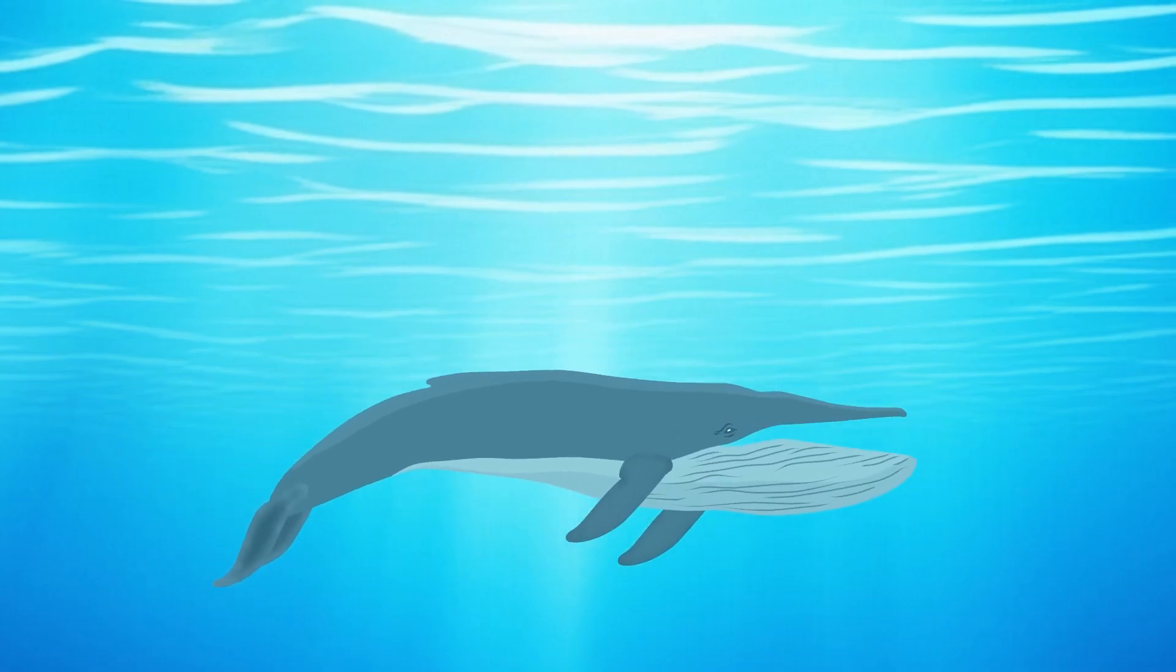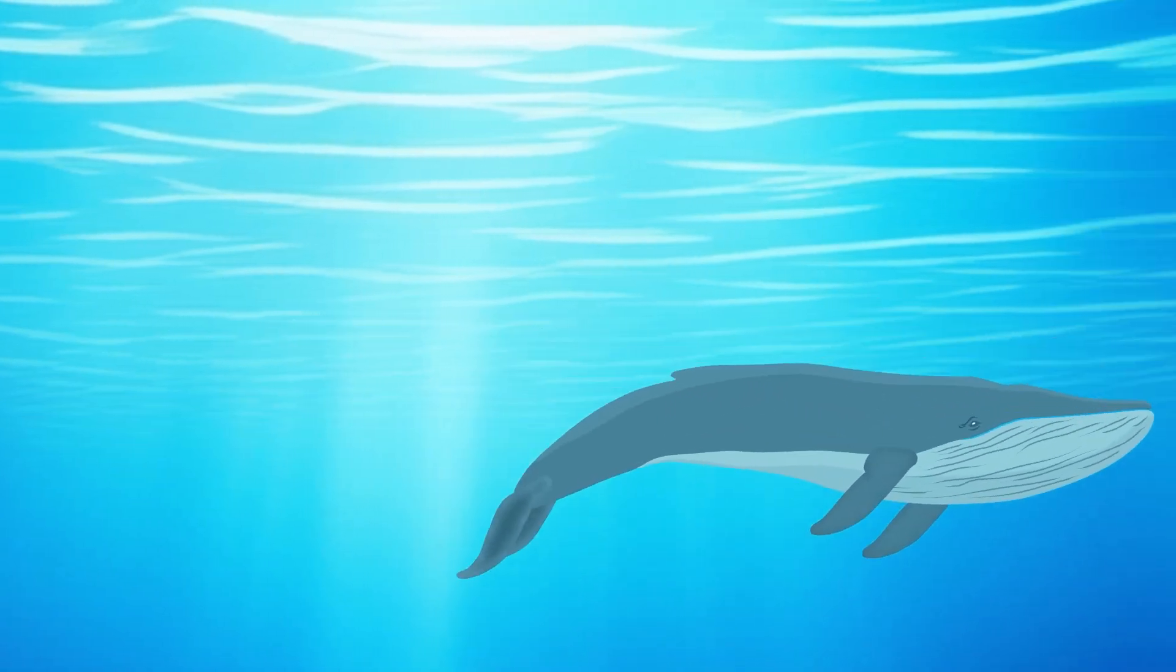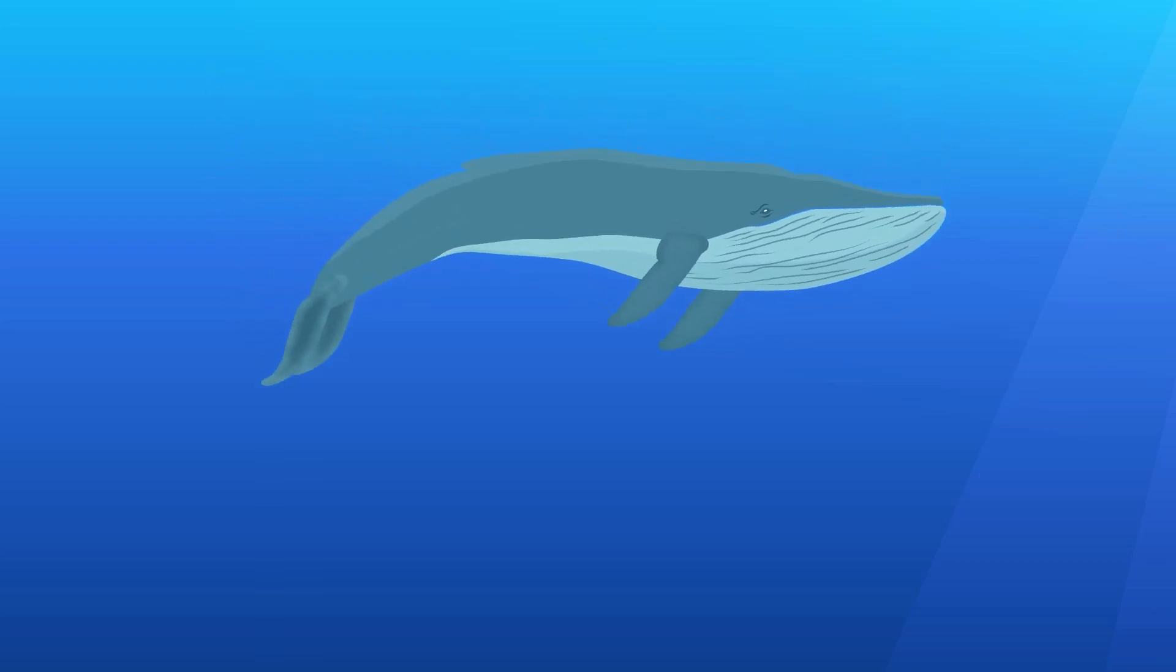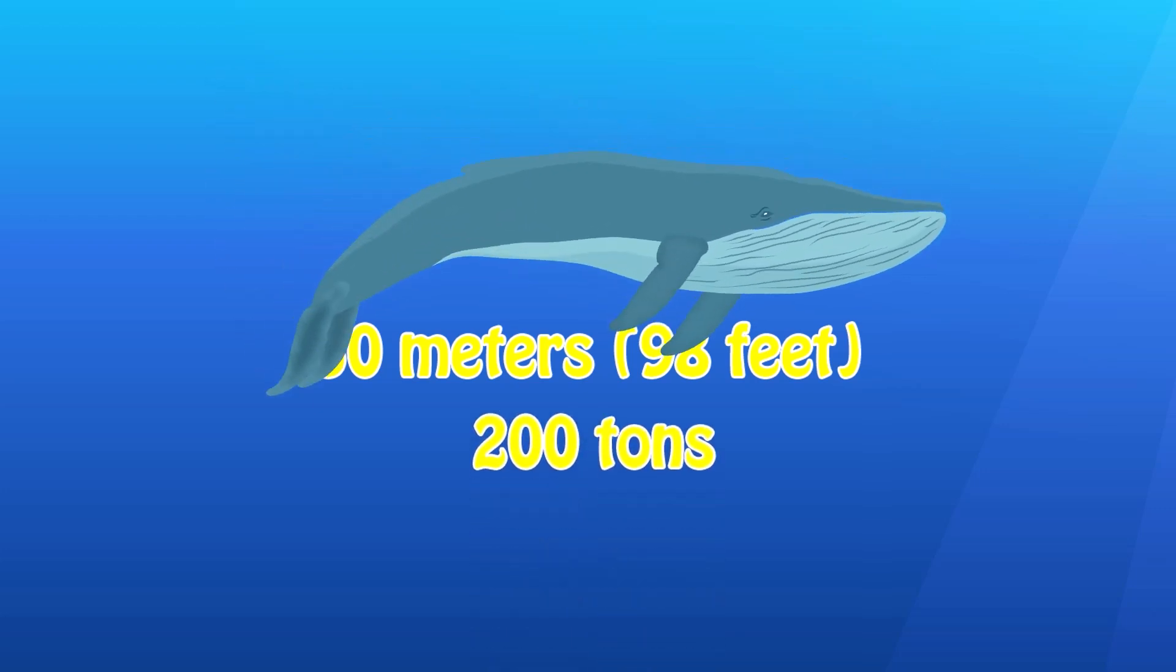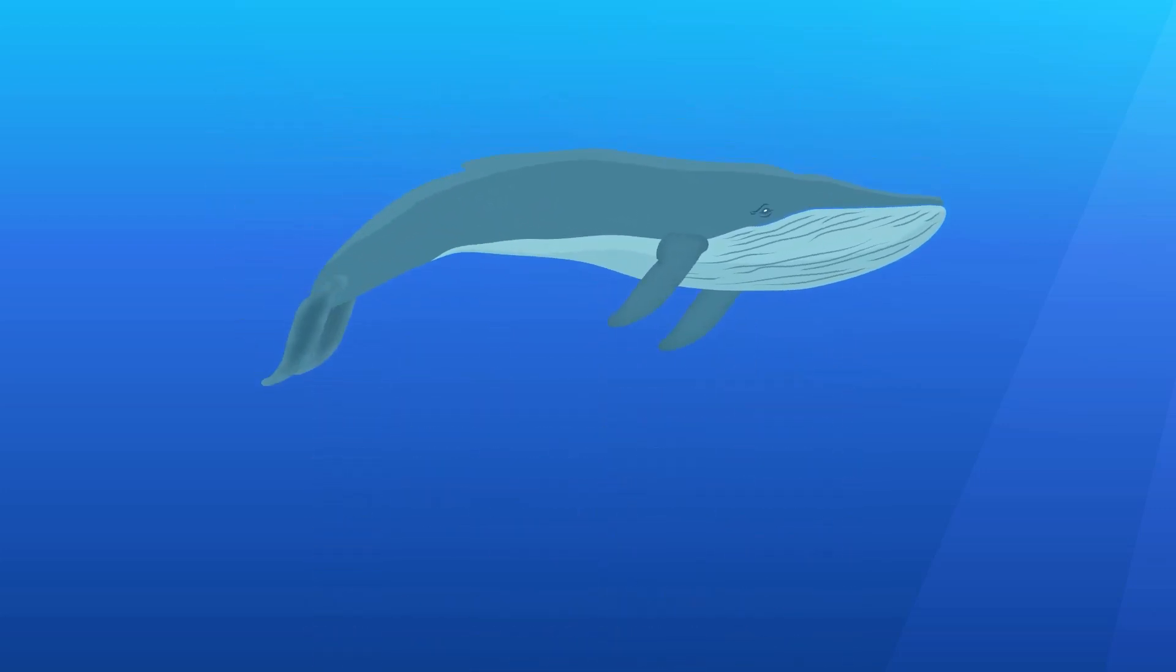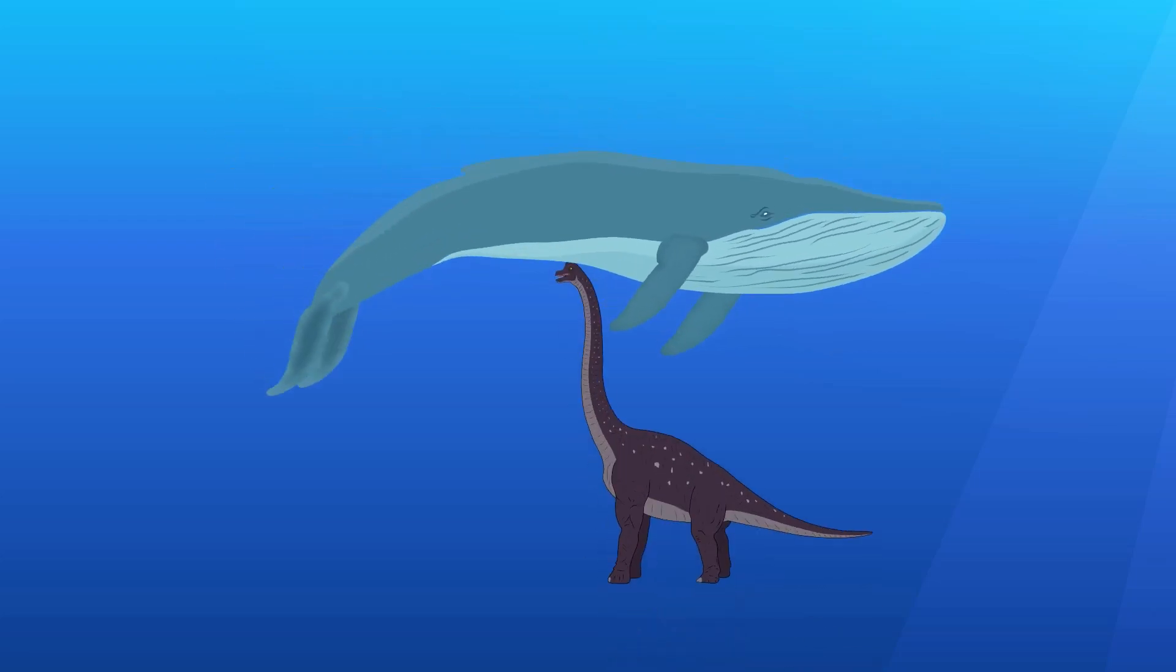The blue whale is the largest animal to have ever lived on earth. Reaching an incredible length of up to 30 meters, 98 feet, and weighing as much as 200 tons, it dwarfs even the largest dinosaurs.